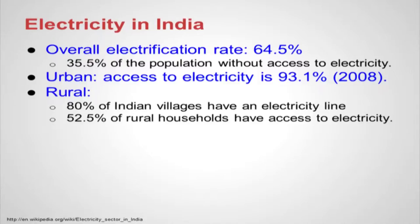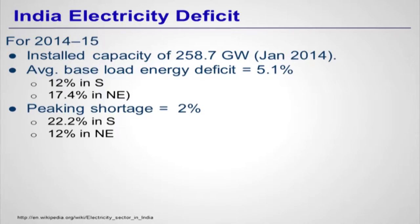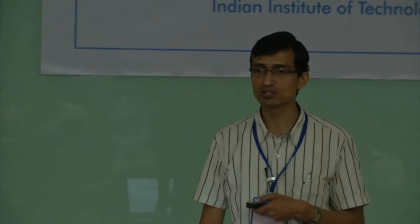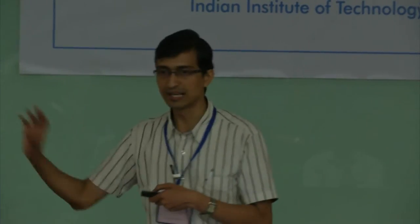This is just some general information about where electricity is used in which sectors. I talked about the electricity deficit. There is a peaking shortage and a base load shortage. How many understand base load and peak power? I will explain a little later.